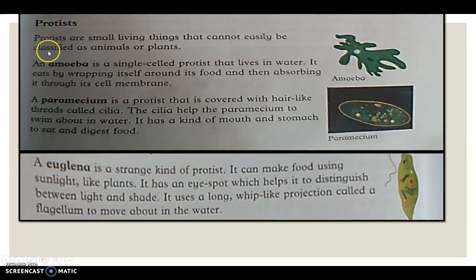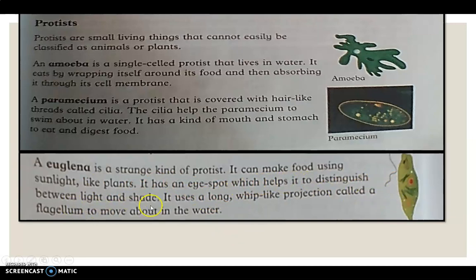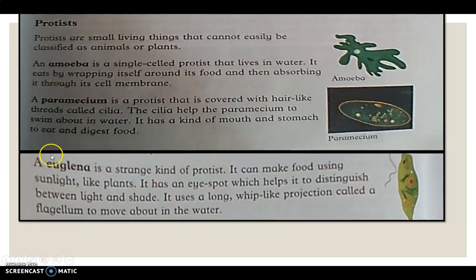Another protist is the euglena. The euglena uses sunlight like a plant — it performs photosynthesis, so it behaves like a plant. It has an eye spot which helps it distinguish between light and dark. It uses long whip-like projections called flagellum to move about in the water. So the three examples of protists are: Amoeba, Paramecium, and Euglena. These three are neither classified as plants nor as animals.